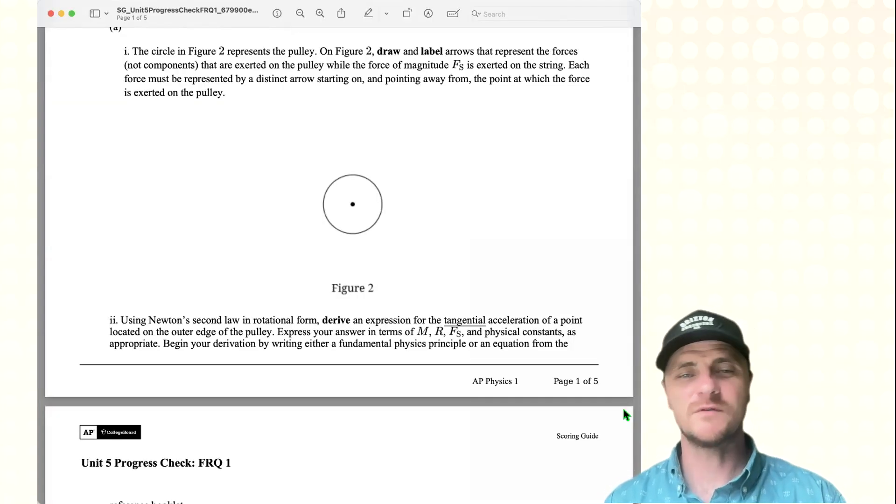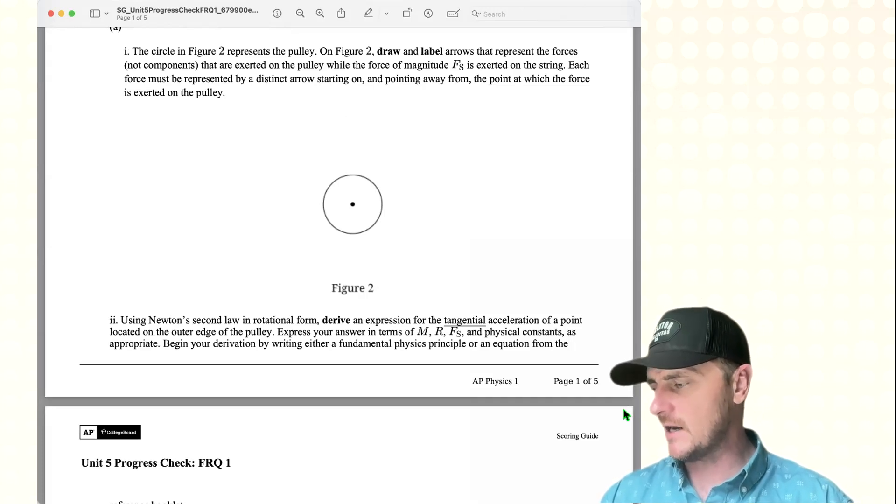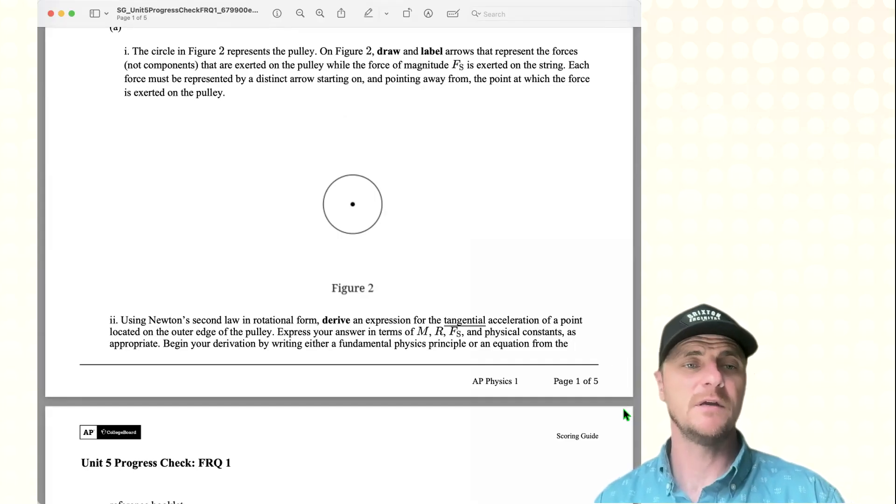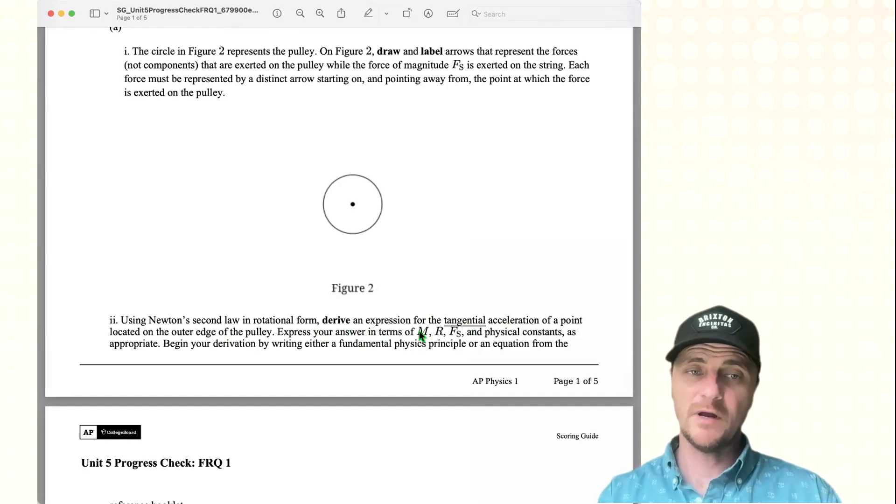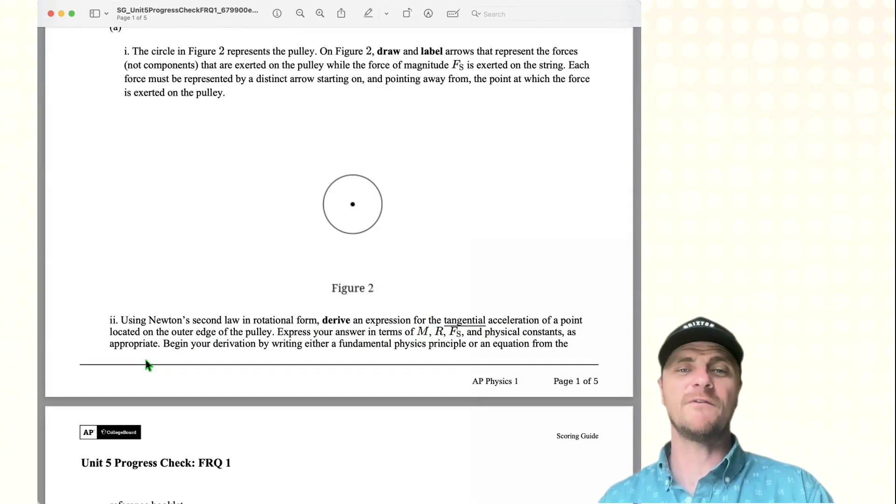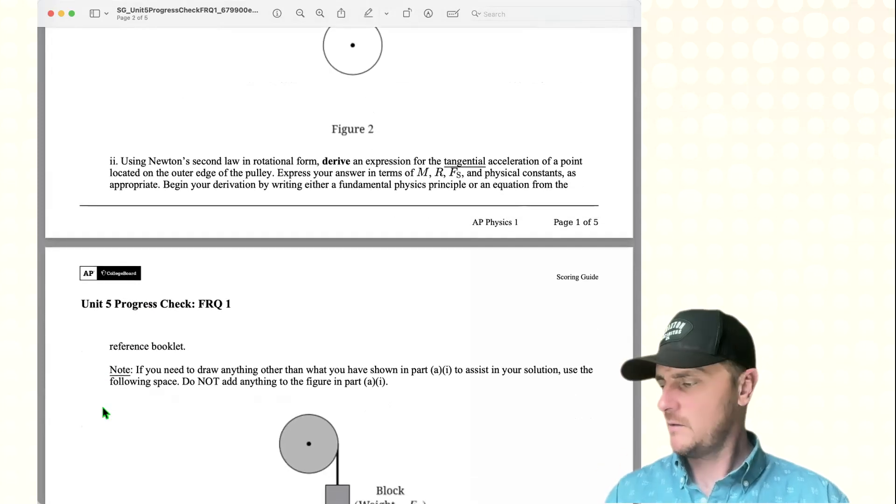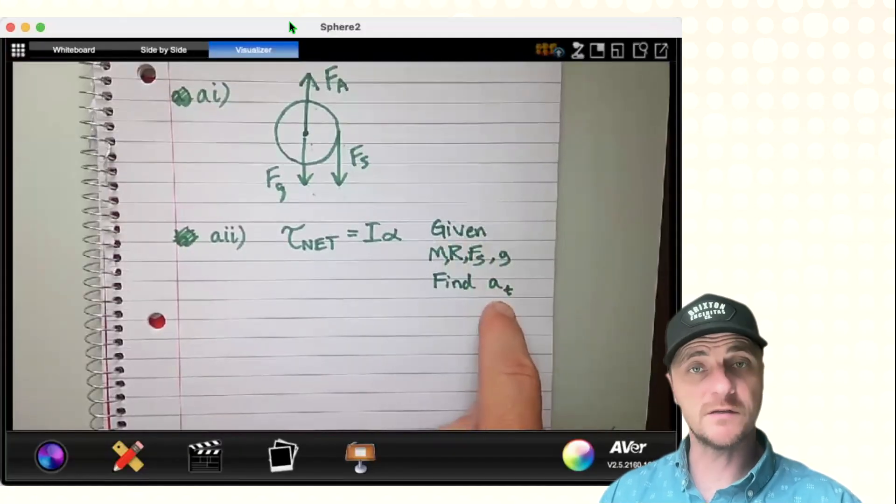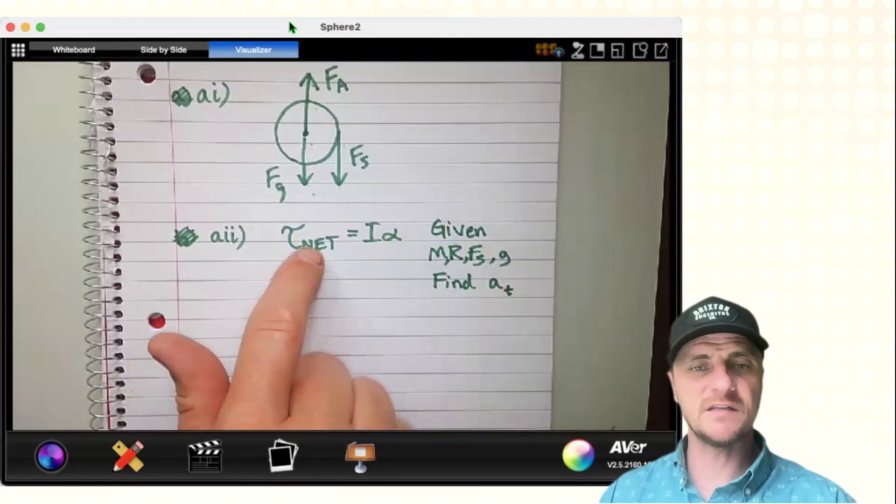Part A2, using Newton's second law in rotational form, what is that again? It is torque net equals I alpha, I being the moment of inertia times angular acceleration. So we're going to derive an expression for the tangential acceleration of a point located on the outer edge of the pulley. Express your answer in terms of M, R, FS, and physical constants as appropriate. Begin your derivation by writing either a fundamental physics principle or an equation from the reference booklet. Perfect. Okay, so this is what we're given. This is what we're trying to find, tangential acceleration. I think it would be smart to find angular acceleration first. So let's dive into this idea.